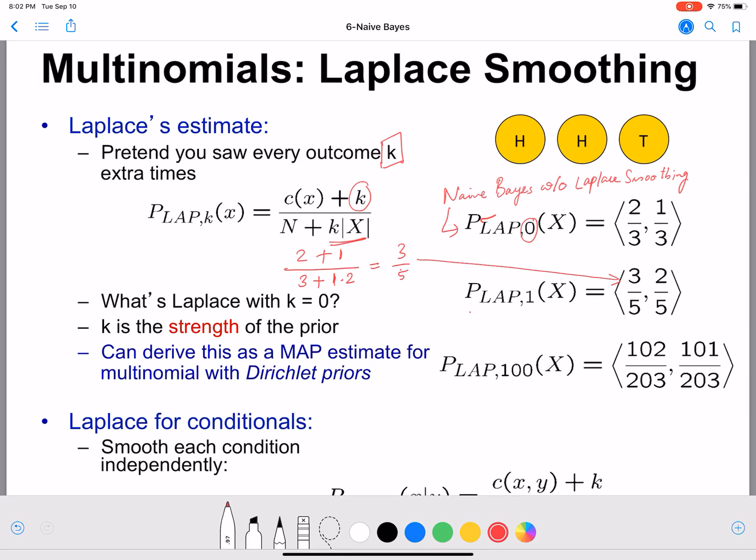So now that would be times two, so now we have that to be equal to 3/5. Let's do for tails as well. So for tails we have one tail, the count that was recorded plus k value of 1 by 3 plus k times cardinality of X is 2, so that is nothing but 2/5.